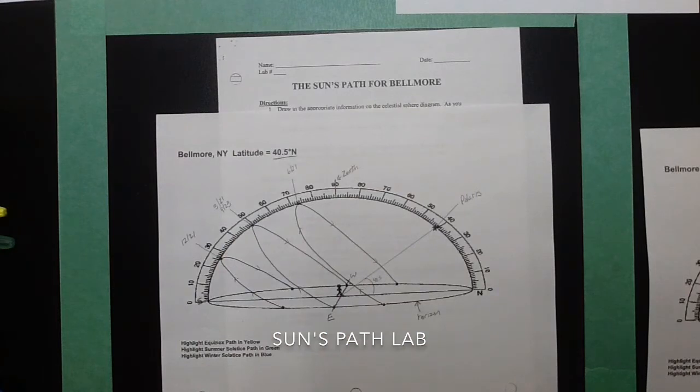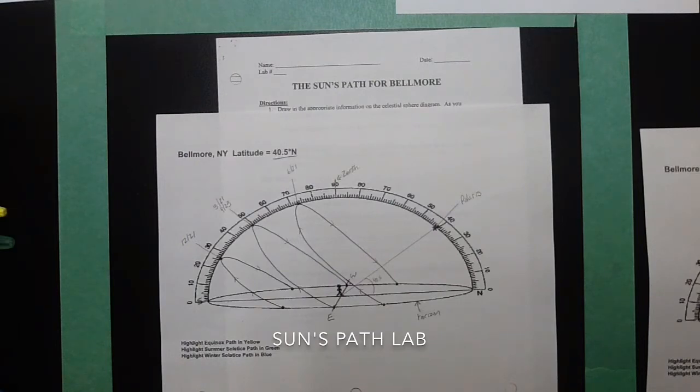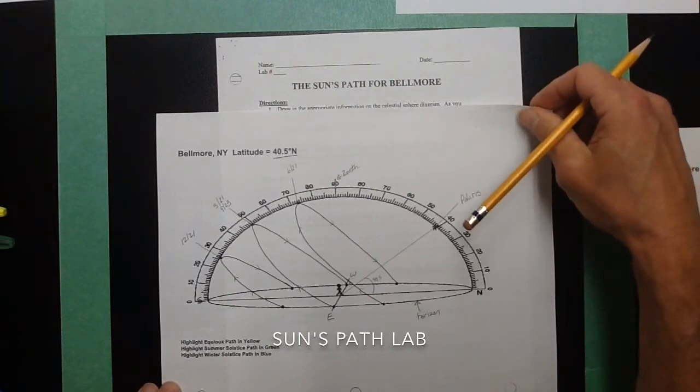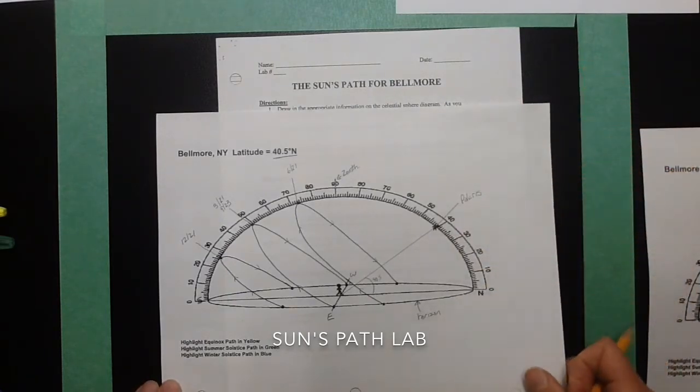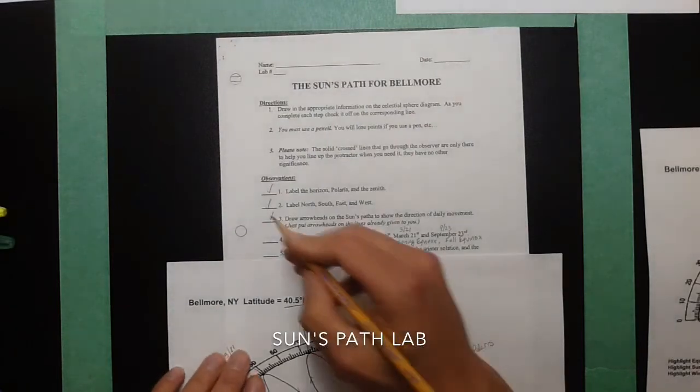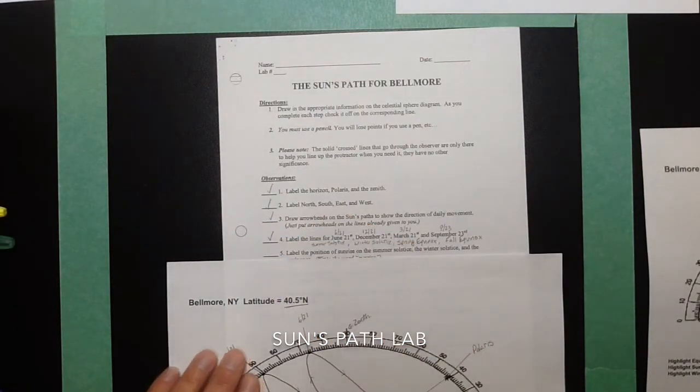Honestly, sometimes on the regents, they'll write 921, because the dates can vary slightly based on your time zone and the exact time when the vertical ray of the sun crosses the equator. So the dates are relative. They can change one or two days, plus or minus. So we've labeled the lines.